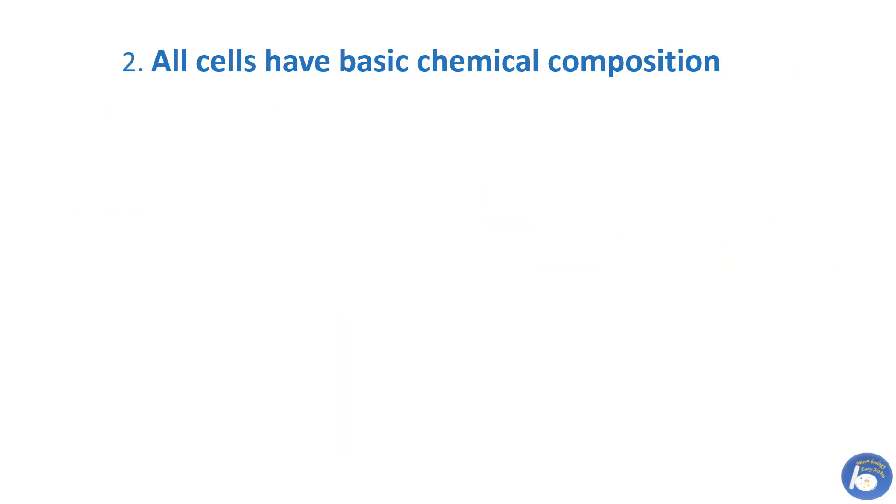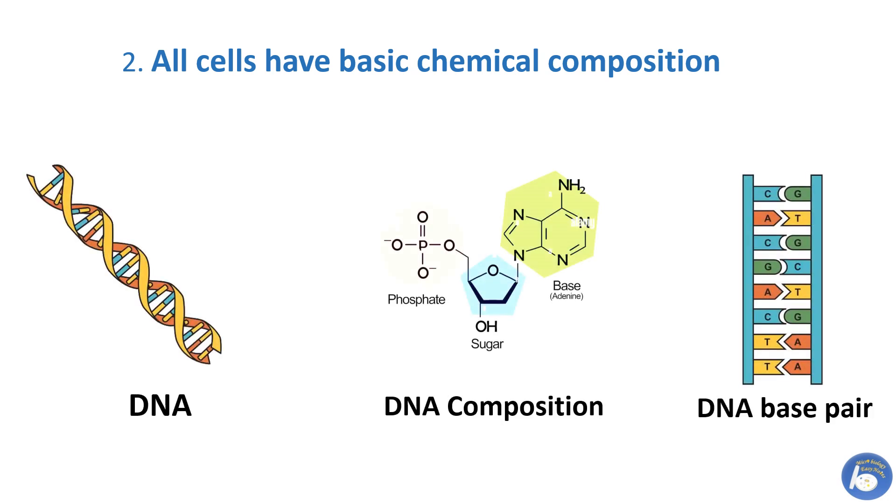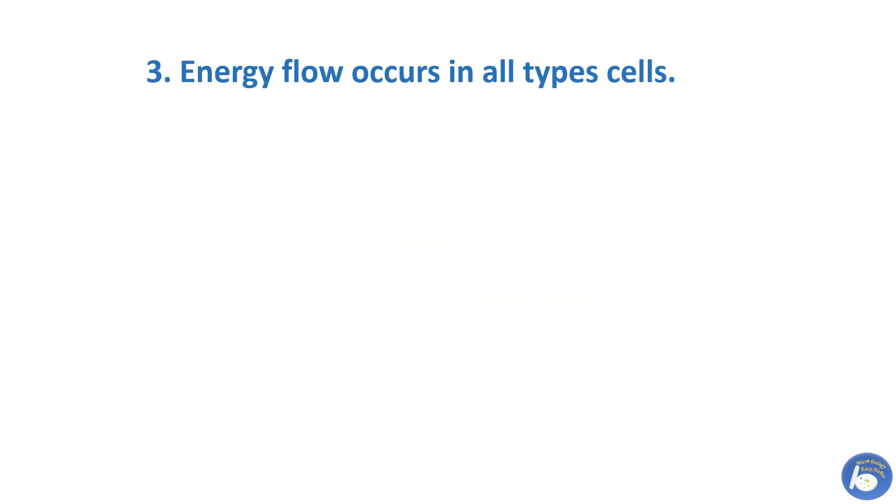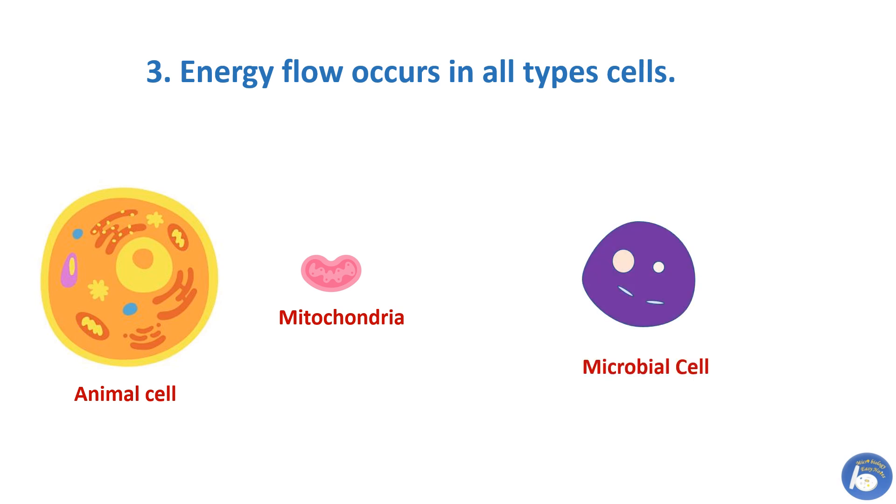The second postulate is: all cells have basic chemical composition. For example, whatever cell it is, the DNA is made up of the same type of nucleotides and phosphate. The third postulate is: energy flows in all types of cells. Eukaryotic cells have mitochondria as a powerhouse which provides energy. In prokaryotic cells, the cell membrane produces energy to fulfill all requirements of the cell as it lacks mitochondria.